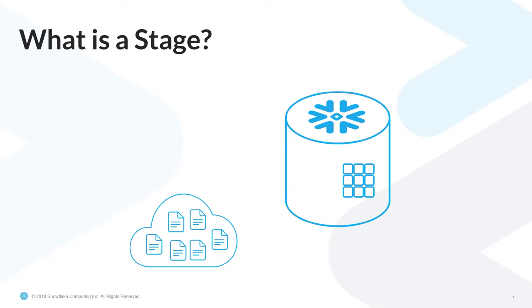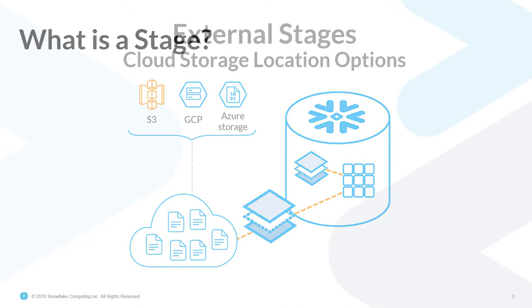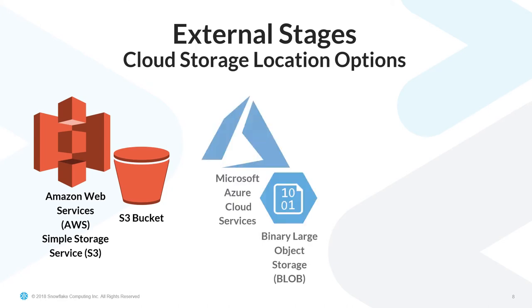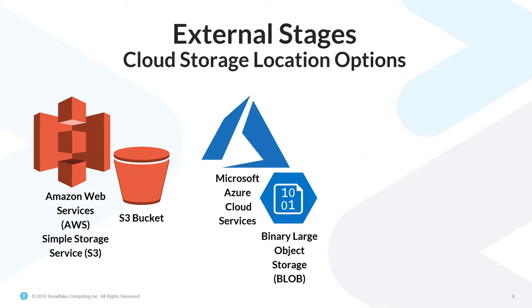Snowflake has two types of stages. There are internal stages, which act almost like directories inside a Snowflake account's local storage. There are also external stages, which act more like a secure gateway between cloud storage services and Snowflake services. When we say cloud storage services, we mean the big three: Amazon S3, Google Cloud Platform, and Azure Blob Storage. If you're planning to create an external stage, you will need a cloud services account. External stages can be based on any of the three cloud storage platforms supported by Snowflake, and Snowflake's online documentation includes detailed instructions for each of these three providers.